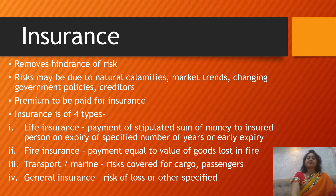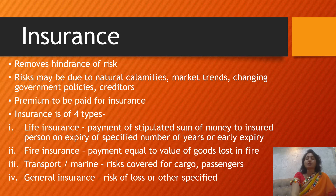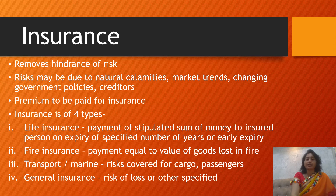Insurance removes hindrance of risk. Risks are of different types: natural calamities such as earthquake, drought, floods, and lightning; market trends including changes in fashion or consumer demand; changing government policies such as changes in taxes on various products; and creditor risks including non-payment by creditors. Each of these risks can be insured. Insurance is of four types: life insurance, fire insurance, transport or marine insurance, and general insurance.